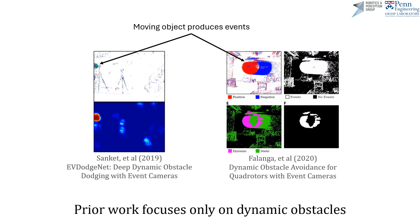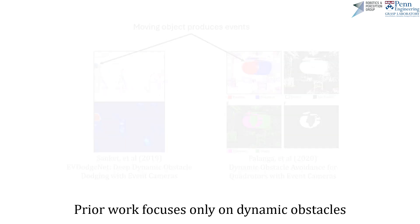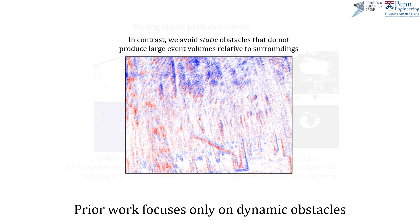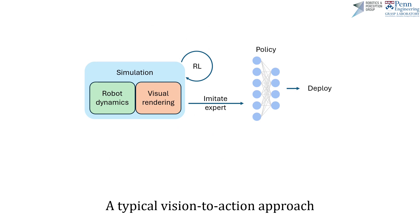Prior works demonstrate event-based obstacle dodging by eliminating ego-motion-produced events and segmenting out dynamic objects. In contrast, static obstacles do not produce events independently of surroundings. This is the first work accomplishing continuous robot navigation purely from events under fast flight.